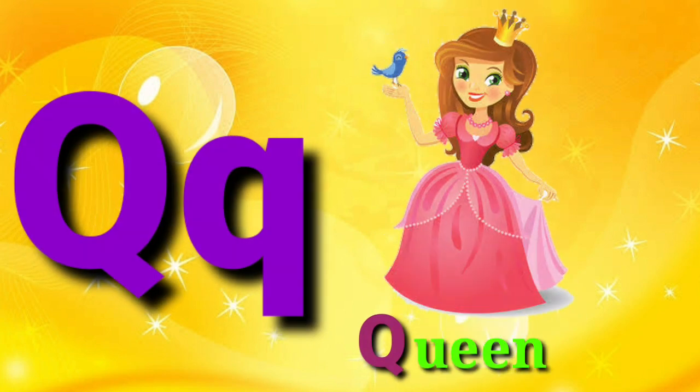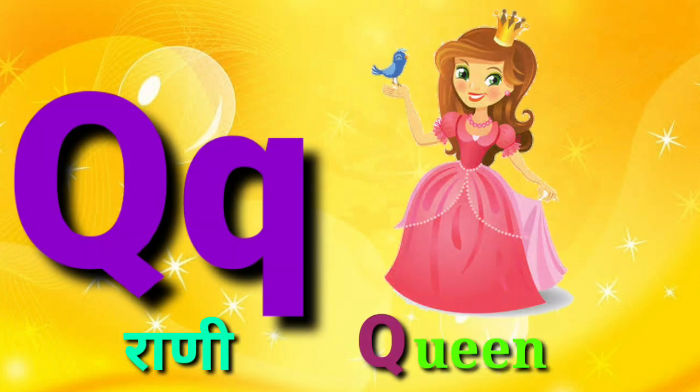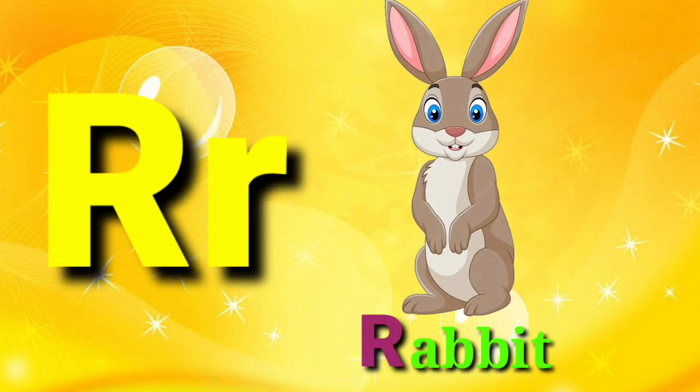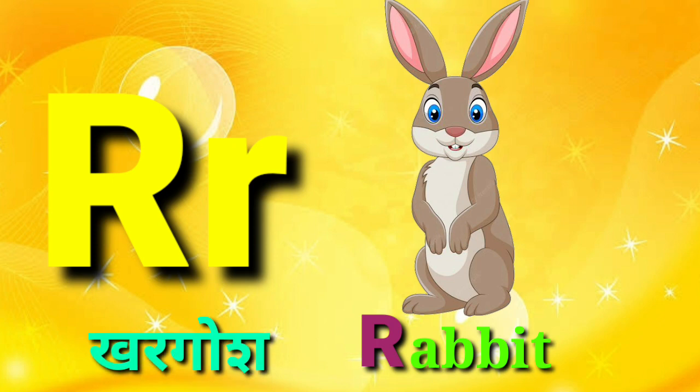Q for Queen, Queen means Rani. R for Rabbit, Rabbit means Khargosh.